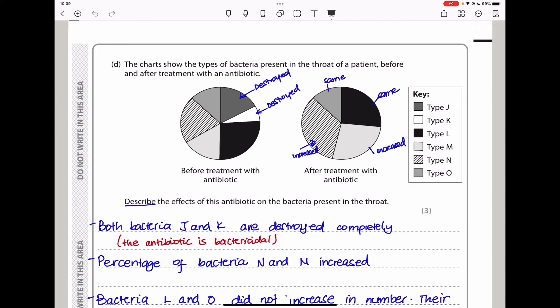Now, here they say the charts show the type of bacteria present in the throat of a patient before and after treatment with an antibiotic. So here we can see there are many different types of bacteria before the treatment. And after we can see some different bacteria. The key thing we can observe is this here remains the same, it's unchanged. However, this one here was completely destroyed because it's not present after the treatment. We can also see that this one was completely destroyed because it's absent here. The other thing we can see is that this one increased, and this one here also increased.